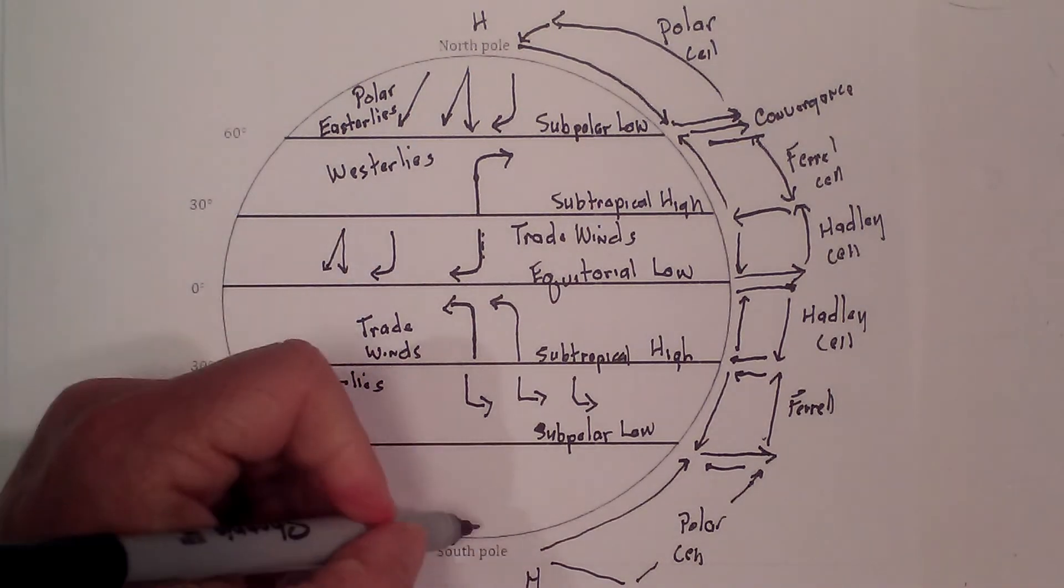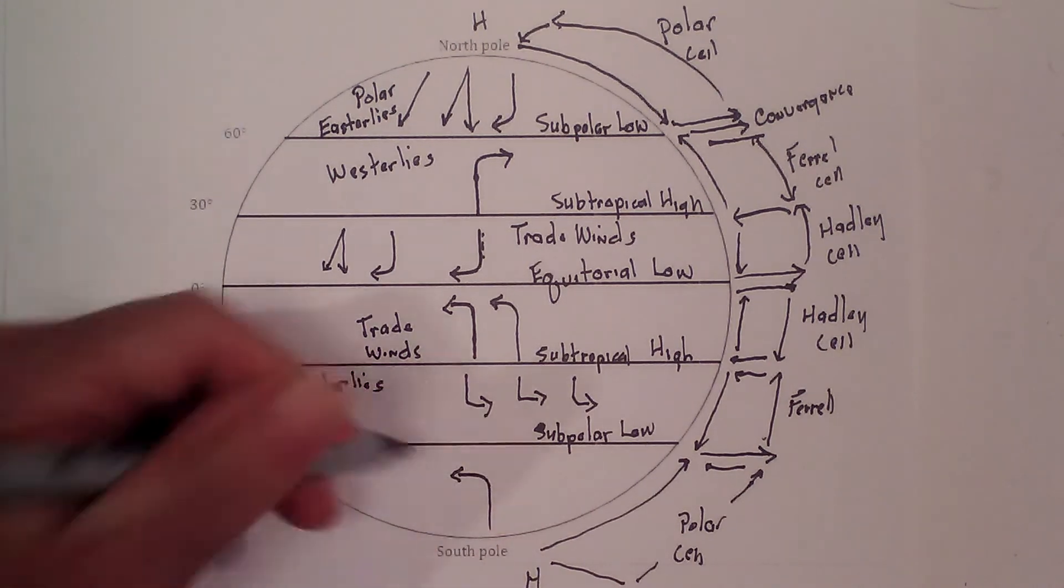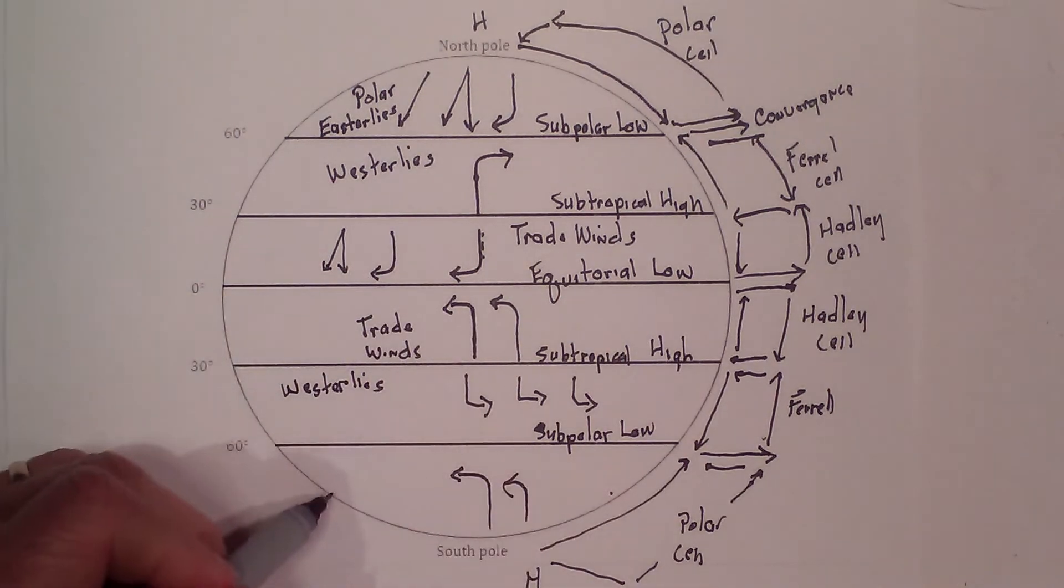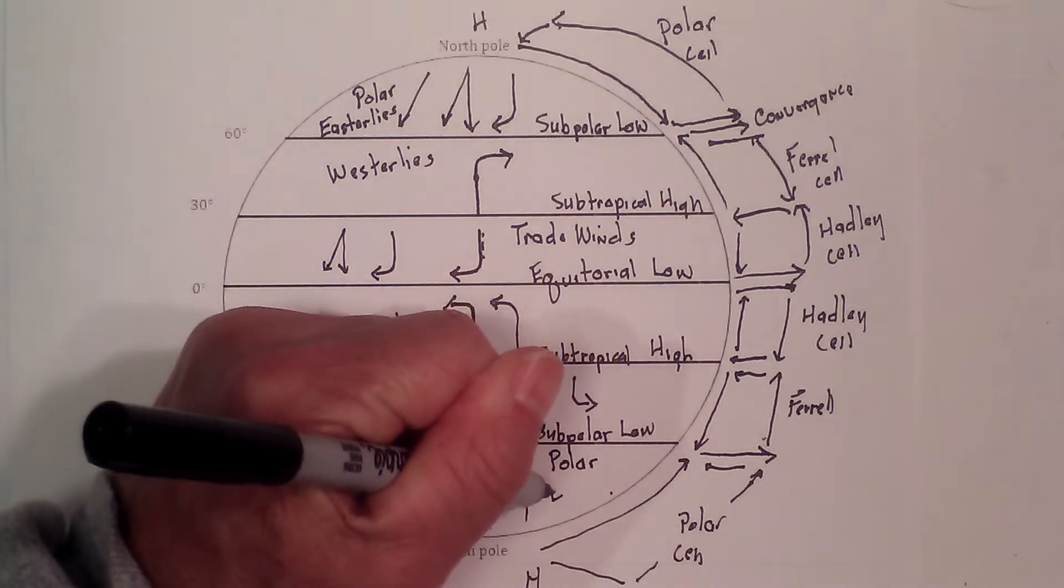Now how about these polar winds? It's going to deflect to the left. So it's going to go in this direction. Deflect to the left. And again, deflect to the left. So it's going from east to west. So those are the polar easterlies.